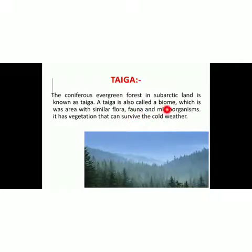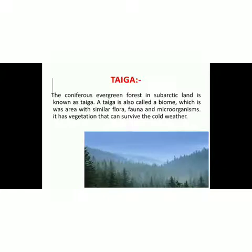Taiga is also called a biome. A biome is an area with similar flora, fauna and microorganisms. Flora means plants, fauna means animals, and microorganisms are small bacteria or one-to-two-cell-containing organisms. So a biome is an area containing particularly similar flora, fauna and microorganisms, and taiga is one such biome.